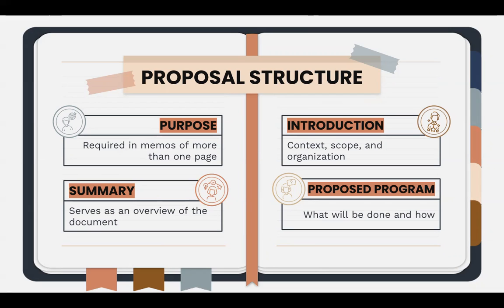In short memos you won't see a statement of purpose, but if it's more than one or two pages long — which yours should be — you will have a statement of purpose, so make sure you include that. In your team project folder, there is an annotated proposal memo with an example of what a purpose statement looks like. It's very straightforward: it says 'the purpose of this proposal is,' and then whatever that is.